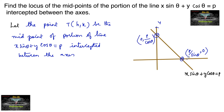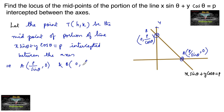Let me consider the first point as A and the second as B. So A = (p/sinθ, 0) and B = (0, p/cosθ) are the points on the coordinate axes.